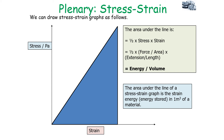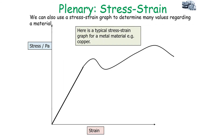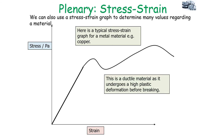We can also draw a stress-strain graph for a material which does not always act elastically or follow Hooke's law. A typical stress-strain graph for a metal such as copper is found for ductile materials — materials that have a high amount of plastic deformation before they break.